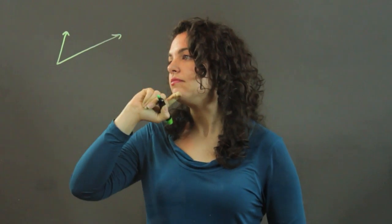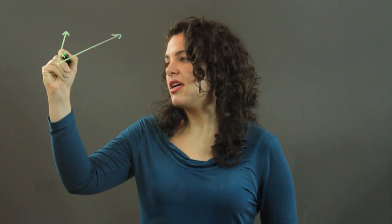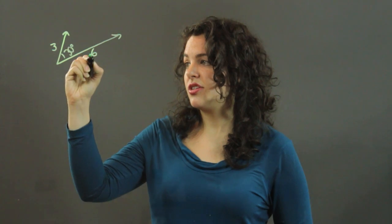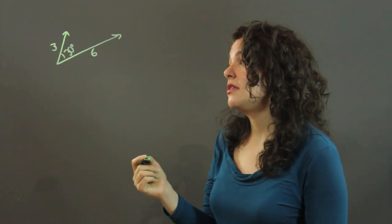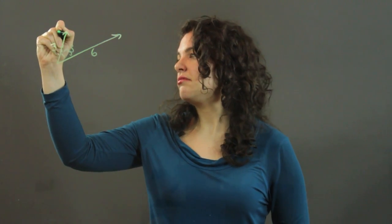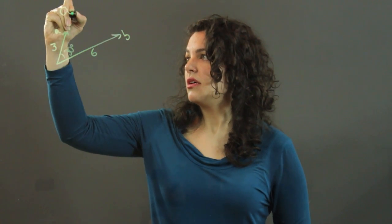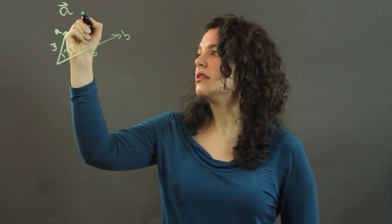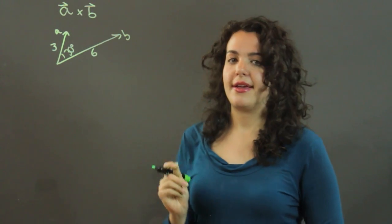Hi, my name is Julia and I'm going to do a vector cross product sample problem for you. So let's say we have two vectors. Between them there's an angle of 30 degrees. This one has a magnitude of 3 and this has a magnitude of 6. Let's say this is A and this is B, and we're finding the cross product of A and B.